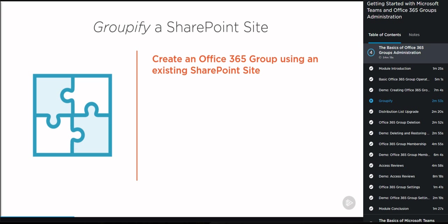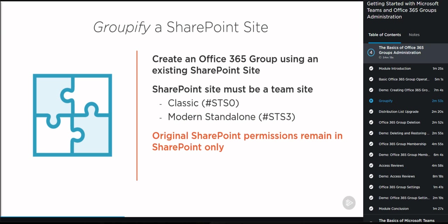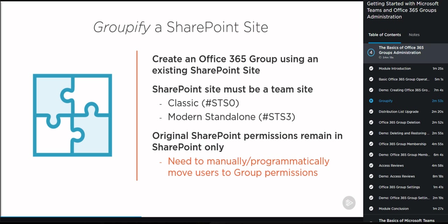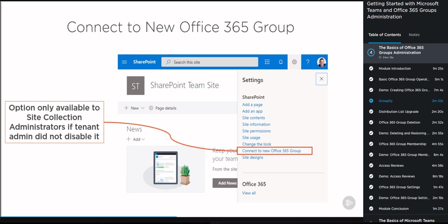To connect an existing site to a new Office 365 Group, from the Site Settings menu you will see the 'Connect to New Office 365 Group' option if you are a Site Collection Administrator and if your tenant administrator has not disabled it. This will only show on sites on which Groupify would work — the two Teams site templates mentioned earlier. You can also use PowerShell to Groupify SharePoint sites. Microsoft provides several PowerShell cmdlets and scripts, but you need to be a SharePoint Online admin and have the PnP PowerShell module. If you don't know what the PnP PowerShell module is, check out the Configuring and Managing SharePoint Online course on Pluralsight.